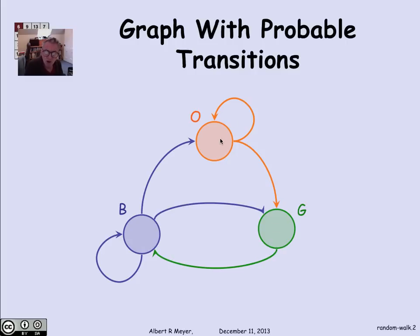The part that becomes probabilistic is that we think of the process of which edge to follow when you're at a given state is made probabilistically. And the only rules are that we're going to assign probabilities to the edges in a way like this, where, for example,